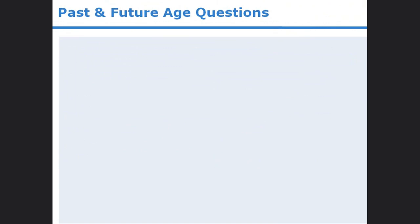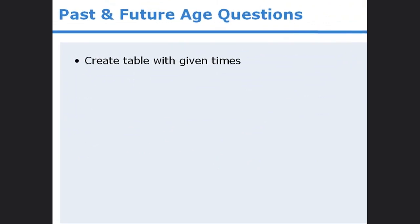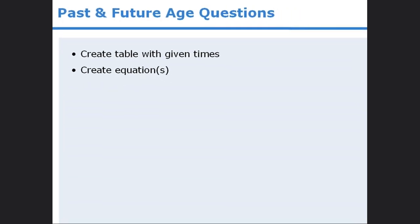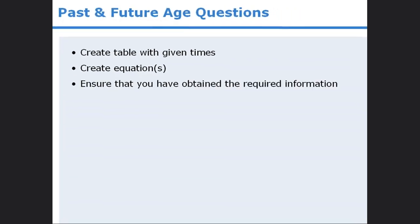In this lesson, we learned to solve word problems involving past and future ages by first creating a table with the given time periods. Then we create one or more equations depending on the number of variables used. Once we've solved the equation or equations, we recheck the question to ensure we have obtained the correct information.